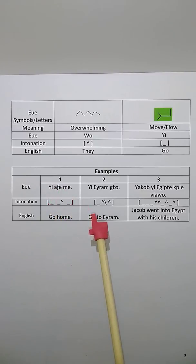And the second example is go to Aram. Go to Aram, and it is ye a ram bo. Ye a ram, as a slide down, it's a downward slide intonation. Ye a ram bo.